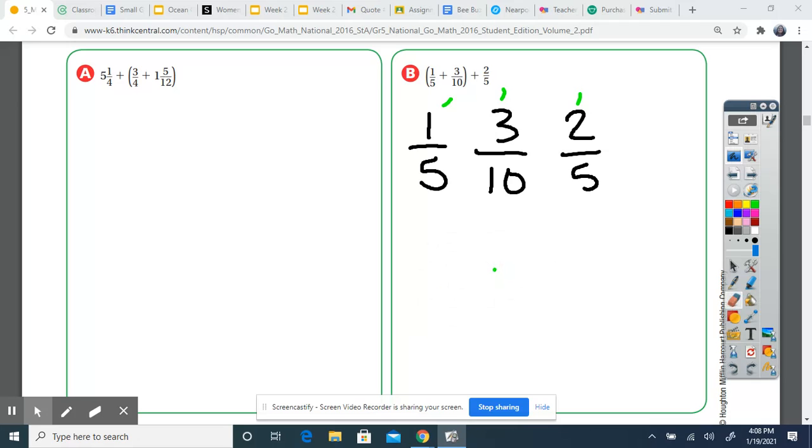So that means that all of our denominators need to have a ten. So we're going to start with this one fifth. Five times what equals ten? Five times two. I'm going to do the same to the numerator. Five times two is ten, one times two is two.